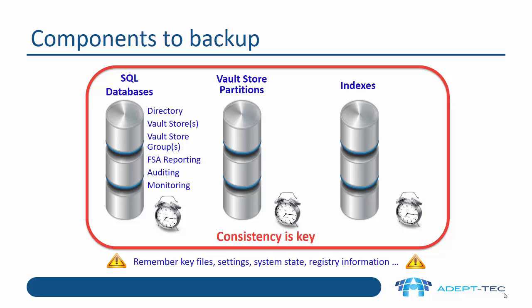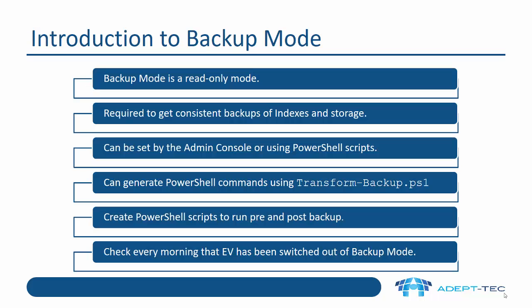The key thing is consistency. We need to back up all these things together when things aren't changing, and we do that by using something called backup mode. Backup mode is like a read-only mode — it's required to get a consistent backup of our indexes and storage. It can be set by the admin console, but we usually use PowerShell scripts, and you can generate those PowerShell commands using a script called transform-backup.ps1. We'll look at how to do that in the demo.